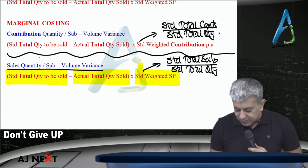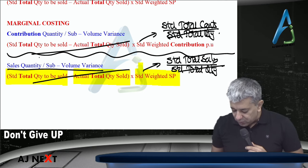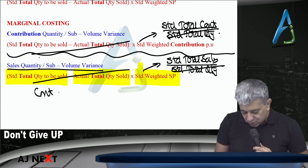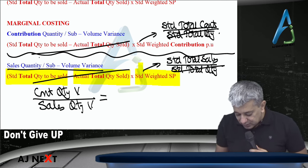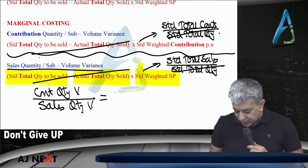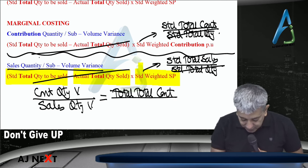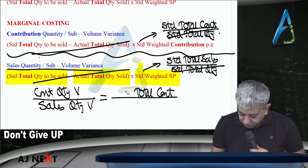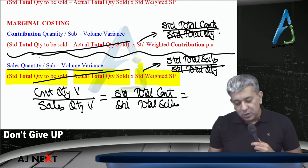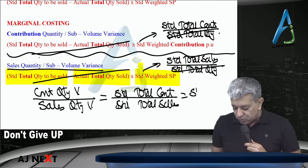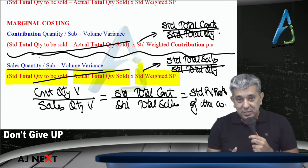Now if we divide these two equations: profit quantity variance divided by sales quantity variance — the bracket cancels and the denominator cancels — leaving standard total contribution divided by standard total sales on the right-hand side. This equals the standard PV ratio of the company. Remember, this is the standard PV ratio of the company, since we have used company-level data.